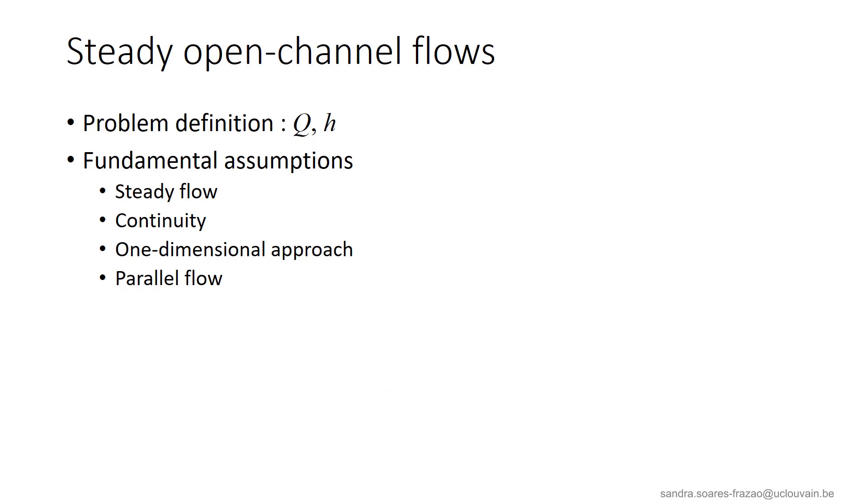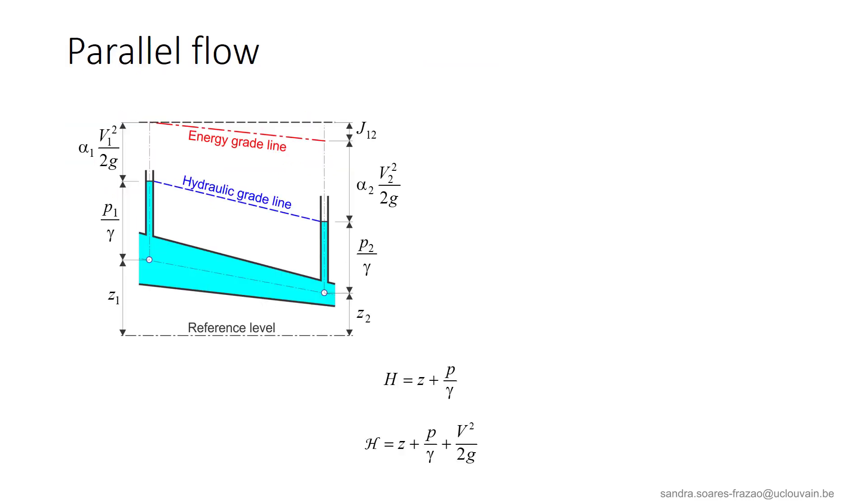Then an important assumption is that of parallel flow. This can be explained by an analogy with pipe flows. In pipe flows, if the flow is assumed to be parallel, the piezometric head h equals z plus p over gamma is constant over the cross section, and the pressure distribution is hydrostatic. The head, or energy level in the cross section, is defined as follows, with v being the mean velocity in the pipe.